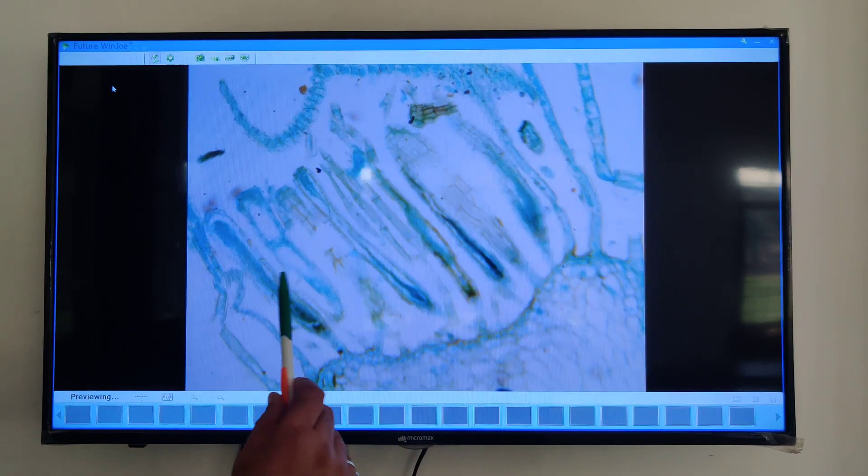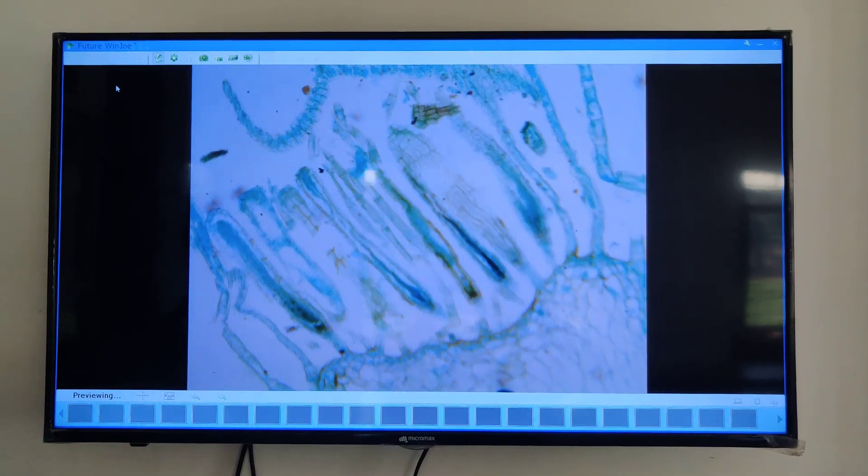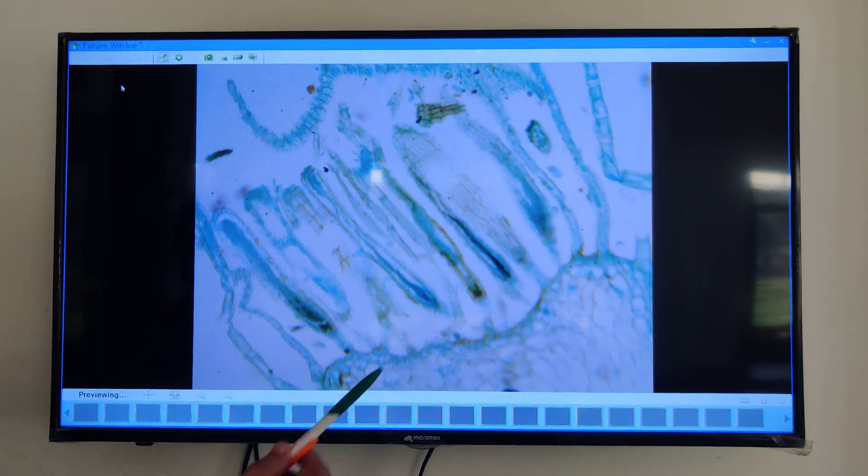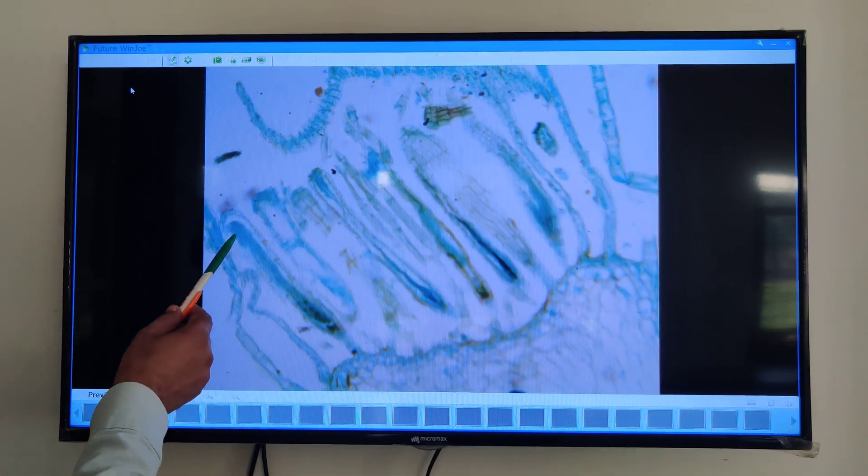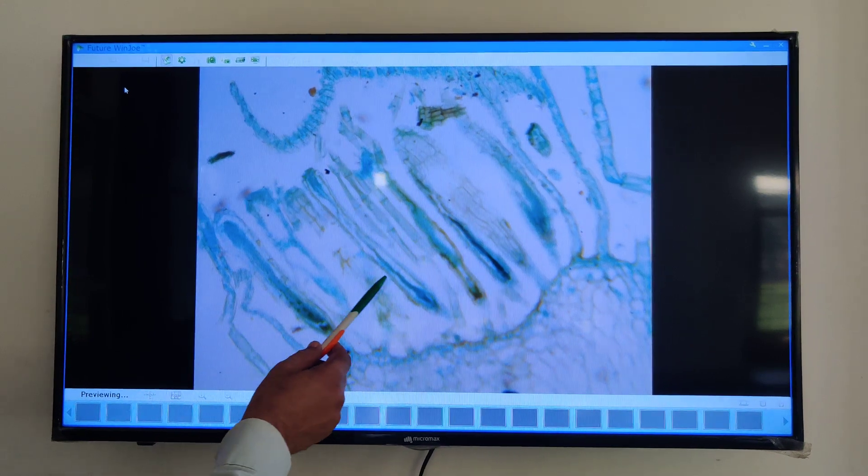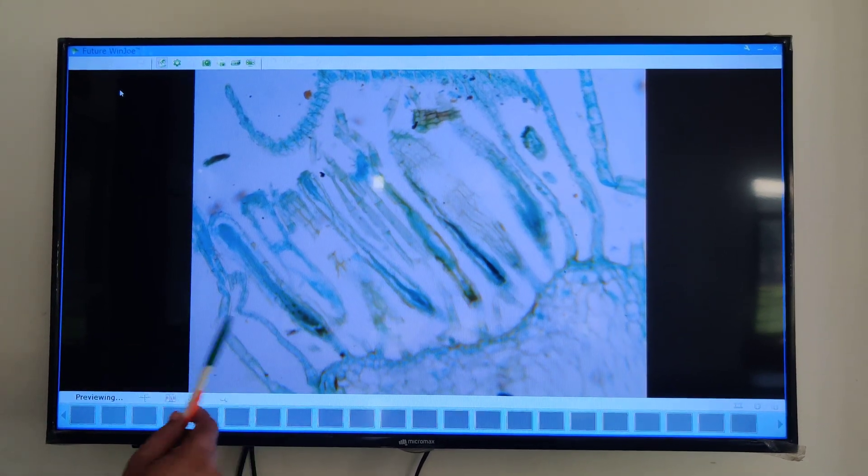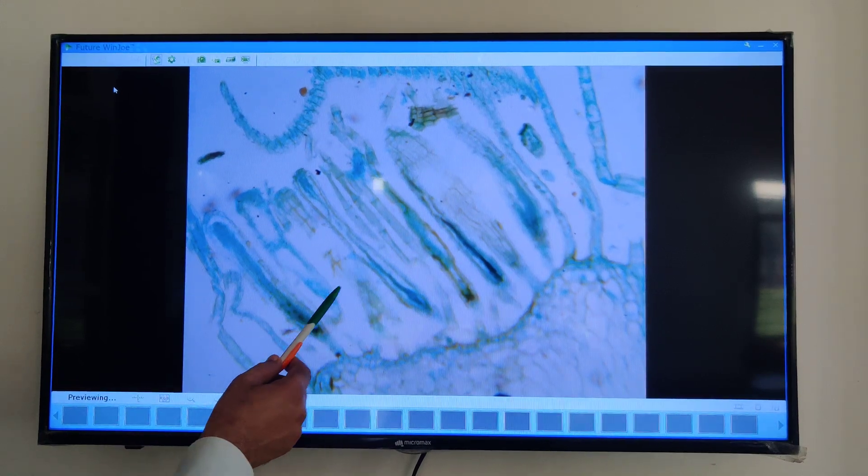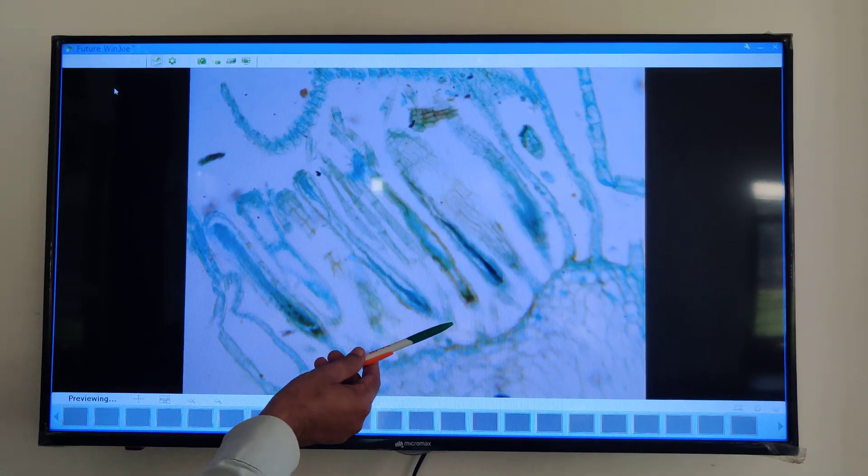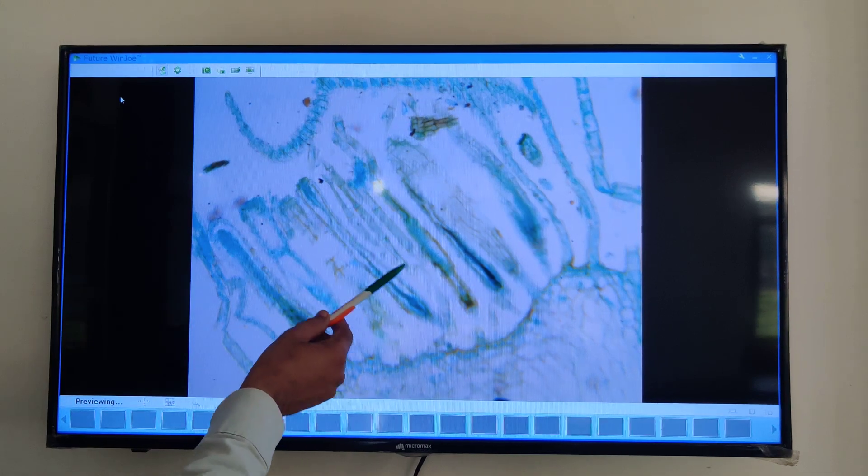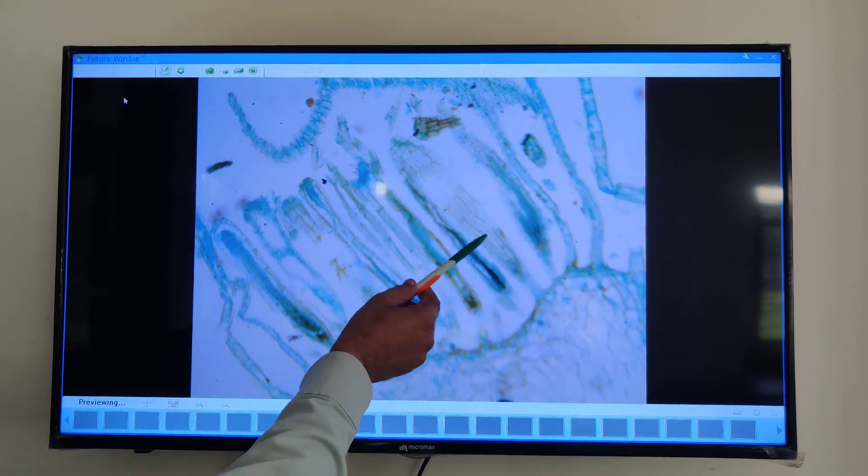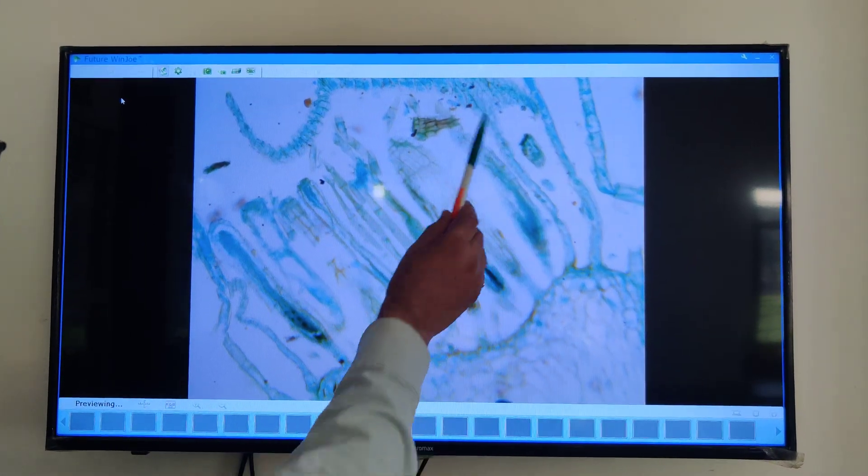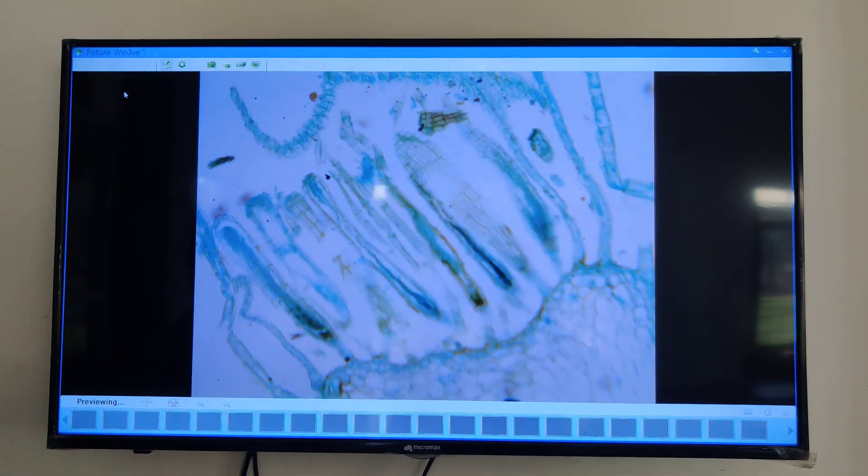This is the permanent slide of a female branch. On this female branch, you can see these structures. These are Archegonia. Archegonia contain egg cell. In between these Archegonia also, you can see multi-cellular long structures. These are Paraphyses.